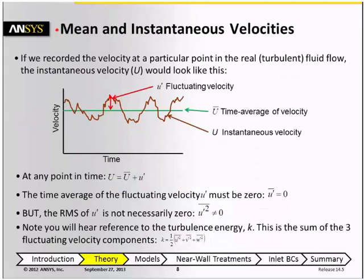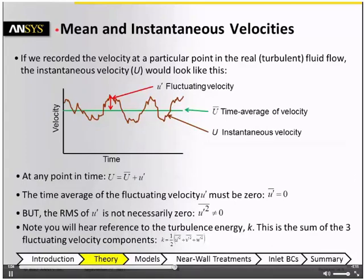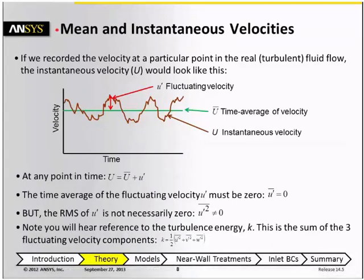As was just mentioned, often for engineering purposes, we're mainly interested in the time average value of the flow variables. So if we record the velocity at a particular point in a turbulent flow, the instantaneous velocity might look something like the brown curve that we see here.